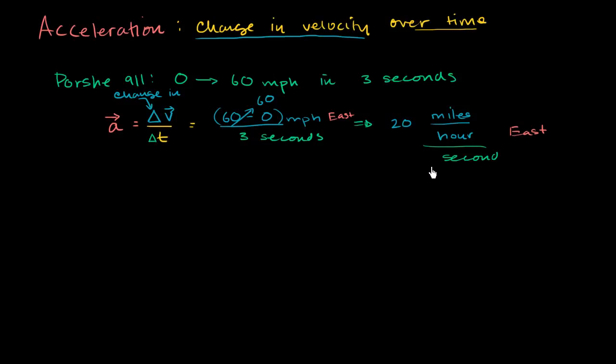That's exactly what this is talking about. Now, we could also write it like this. This is the same thing as 20 miles per hour. Because if you take something and you divide it by seconds, that's the same thing as multiplying it by 1 over seconds. So that's miles per hour, hour seconds.